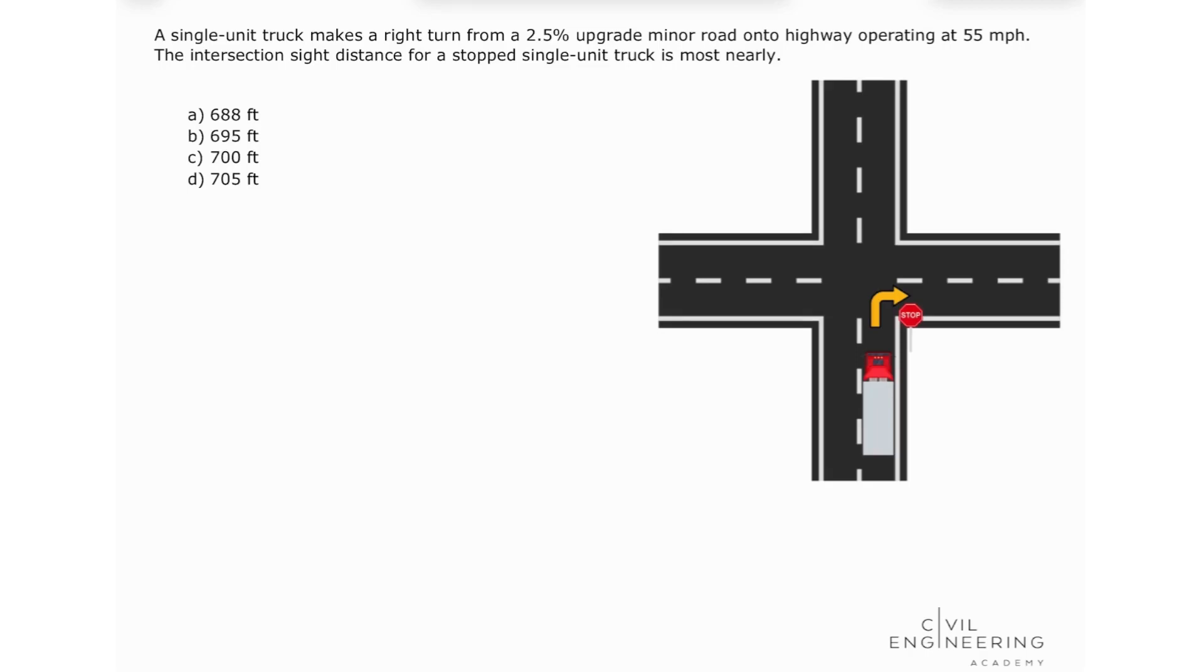A single unit truck makes a right turn from a 2.5% upgrade minor road onto highway operating at 55 miles per hour. The intersection side distance for a stopped single unit truck is most nearly.